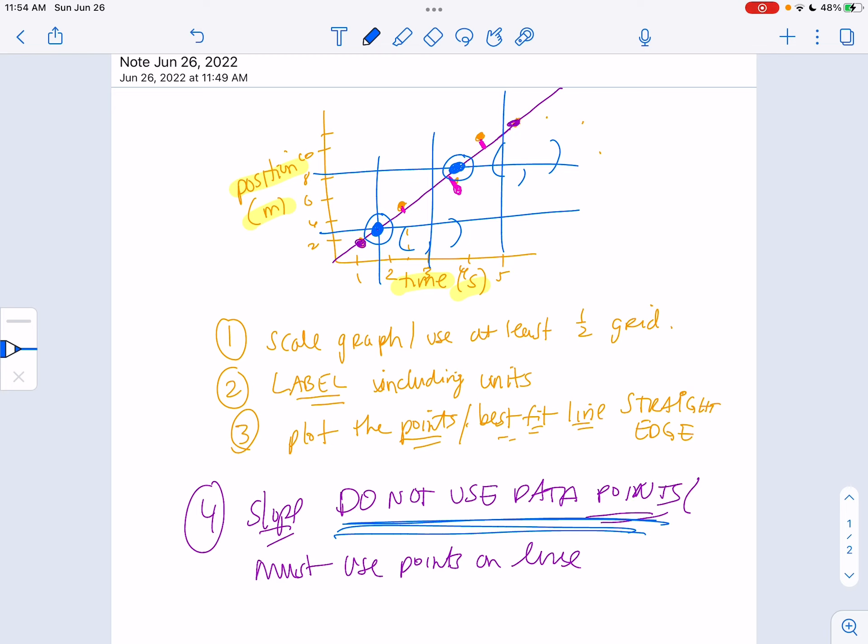Okay, so we're going to do this a lot all year. This is a real simple one. They will get harder. But scale the graph with numbers, use at least half the grid. Label with units and variable. Plot the points and use a straight edge for the best fit line. And then when calculating the slope, do not use data points, choose two other points on the line and label them. Circle, label, make it very obvious for your reader. Then you'll get all the points on these.